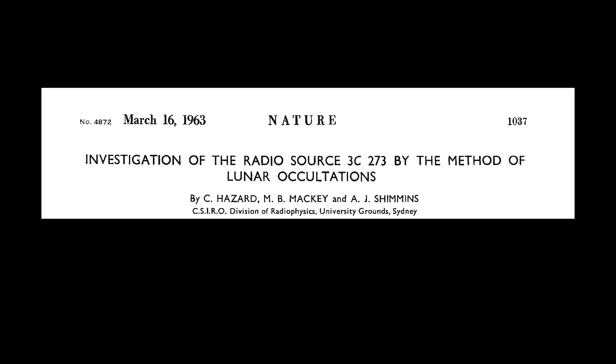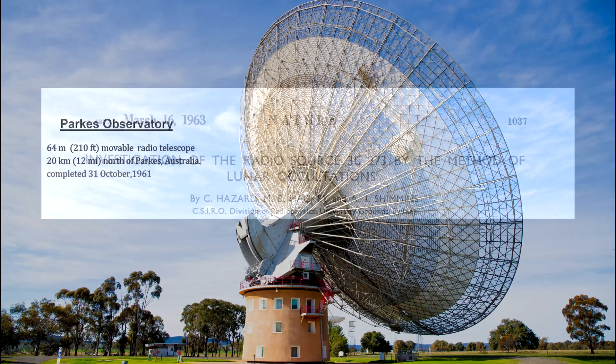On March 16, 1963, three astronomers, C. Hazard, M.B. Mackey, and A.J. Simmons, published a paper in Nature describing what they found in 1962, using lunar occultations with the New Parks Radio Telescope in Australia, to study the intense radio source 3C273.